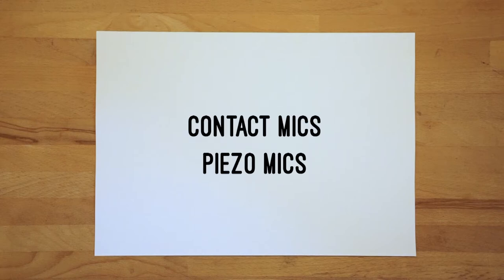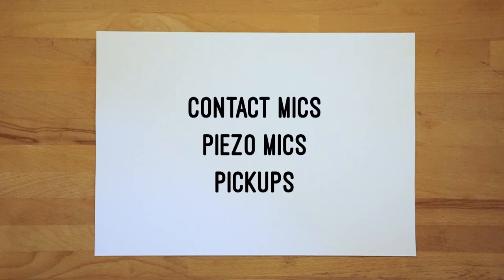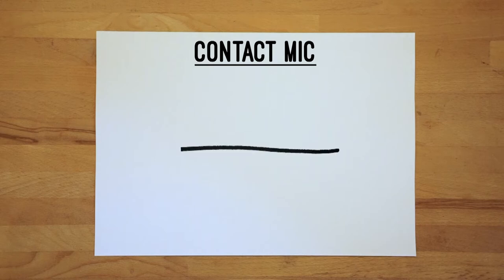Lastly, we will look at the confusing contact, piezo mics, and pickups group. These terms are sometimes wrongly used interchangeably, which makes it worth looking at what is what and the differences between them. First off, a contact microphone — this is a microphone that, as the name suggests, records audio vibrations through contact with solid objects. They are not sensitive to air vibrations, but convert structure-borne sound waves to an electrical current.